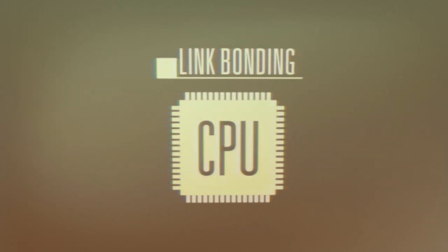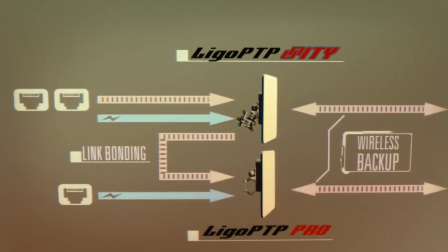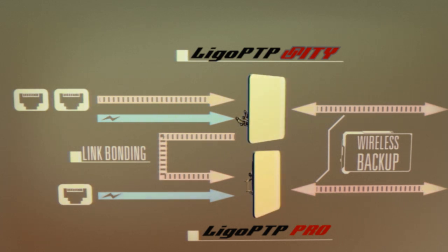Link bonding is accomplished using a powerful CPU and a fair queuing mechanism. The throughput is not only doubled but it also assures radio link redundancy at the same time.